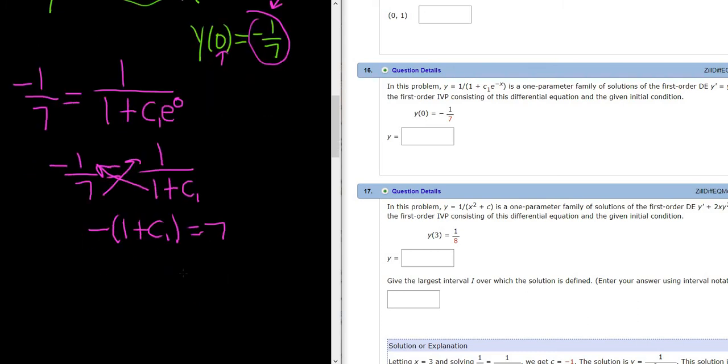Let's keep going. So we have negative 1 minus c1 equals 7. Adding 1 to both sides, we get negative c1 equals 8, so c1 equals negative 8.